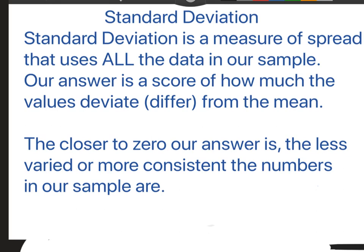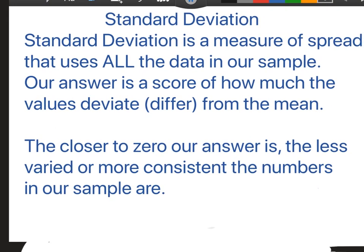Standard deviation is a measure of spread that uses all the data in our sample. It doesn't just use the highest and lowest, it uses every single number on the list. Our answer is a score of how much all our values deviate or differ from the mean, because deviation means you go off the path.